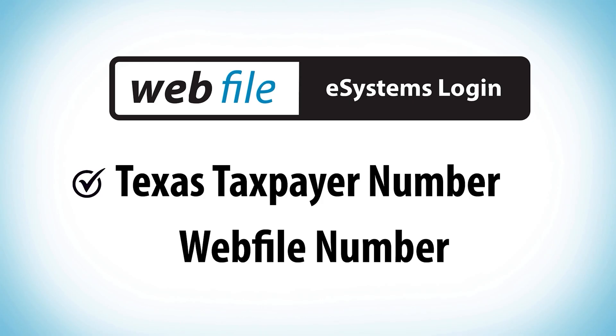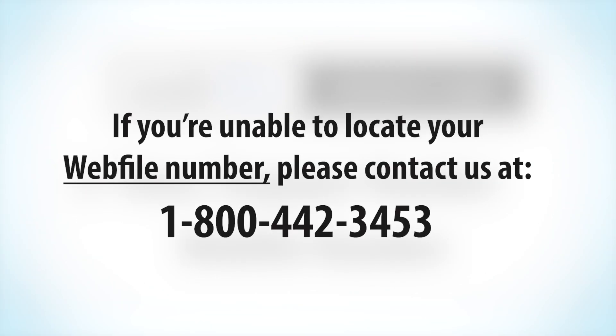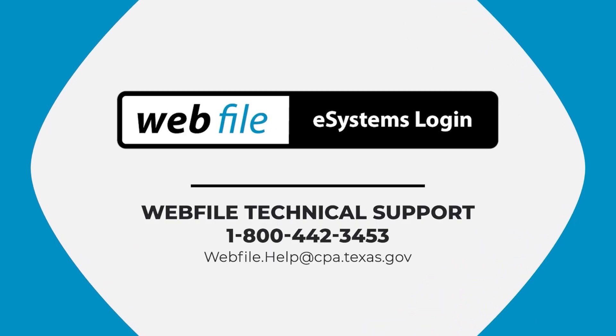Once you've identified your Texas taxpayer number, you'll also need the corresponding web file number to establish access to the tax account on your eSystems profile. If you're unable to locate your web file number, please contact us at 1-800-442-3453. You'll be asked to provide confidential account information such as prior return data or prior payment, in addition to your Texas taxpayer number. We have more web file videos to better serve you — check the video description for links. If you need further assistance, we're happy to help. Please reach out to us by email or phone — our contact information is also available in the description.